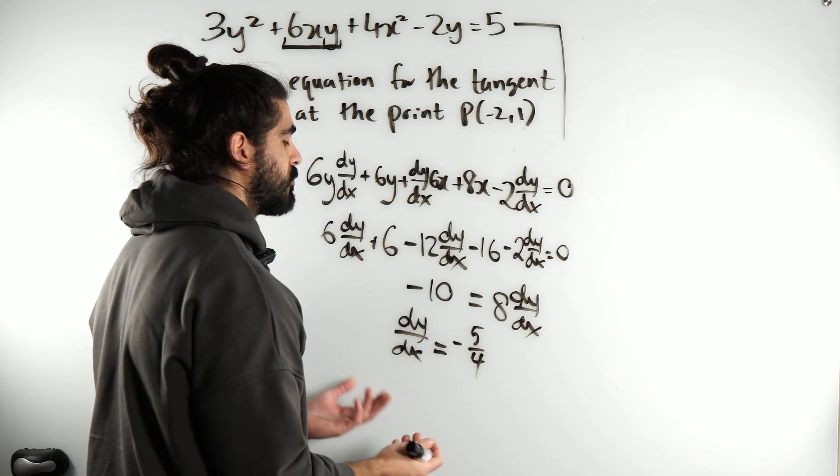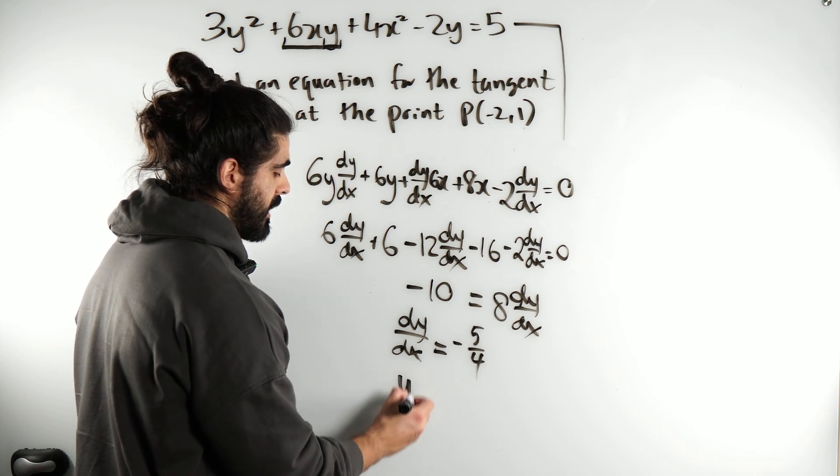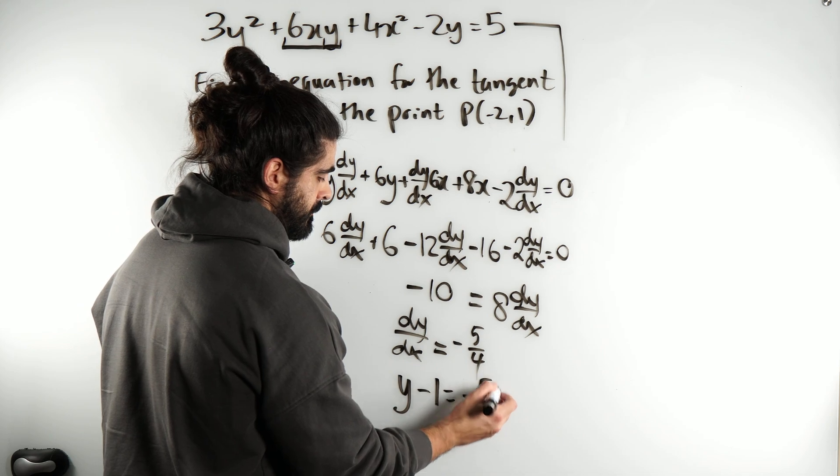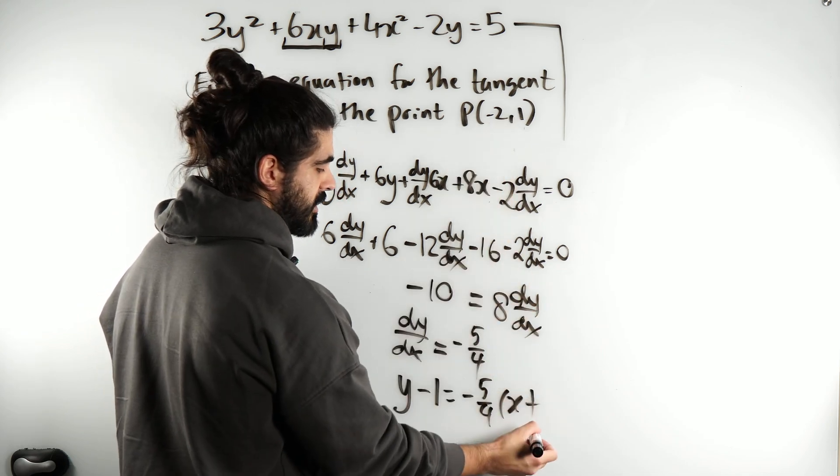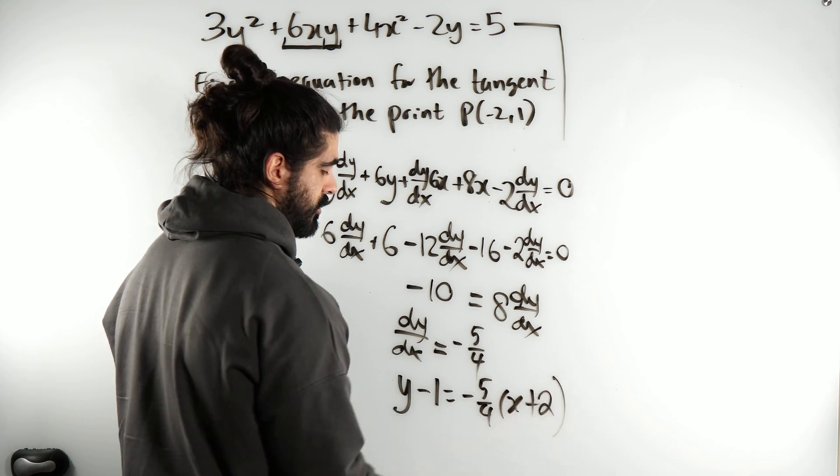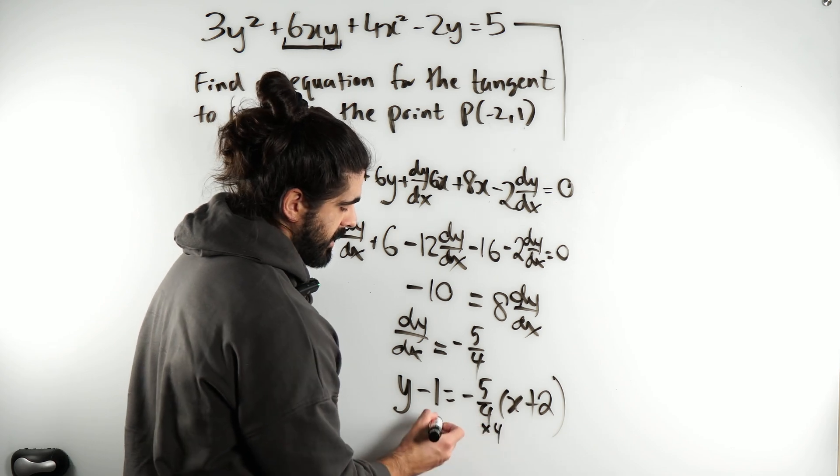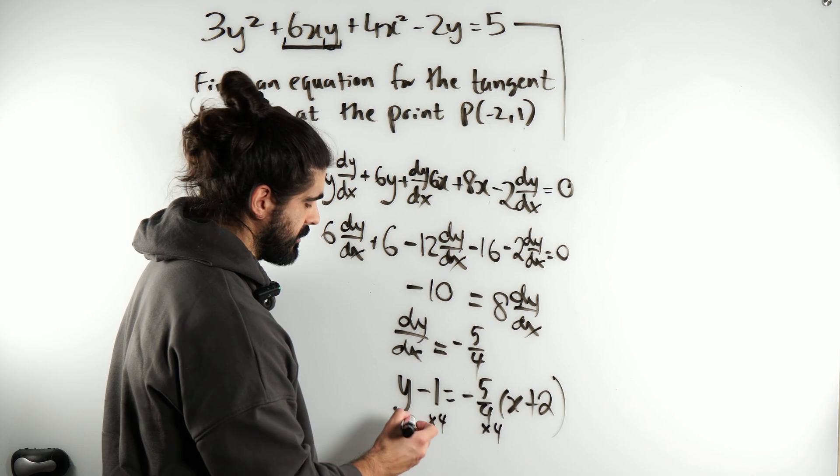Tangent has the same gradient of the curve at the same point, so using y minus y1. y minus the y coordinate of 1 is the gradient. x minus the x coordinate of minus 2, the double negative becomes plus 2. Next thing you know, you guys should know the type of form you're looking for, is we're doing the form ax plus by plus c is 0.